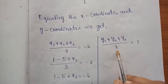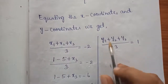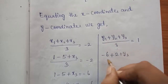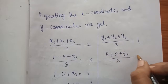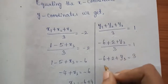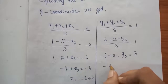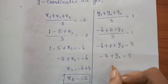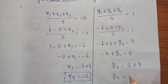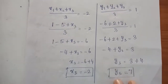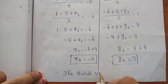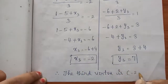For the Y coordinate: (-6 + 2 + Y3)/3 = 1. By cross multiplication: -6 + 2 + Y3 = 3, so -4 + Y3 = 3, therefore Y3 = 3 + 4 = 7. Therefore the third vertex of the triangle is (-2, 7).